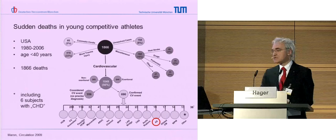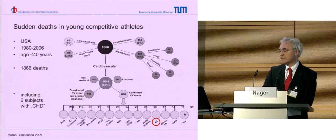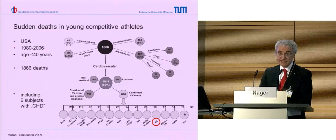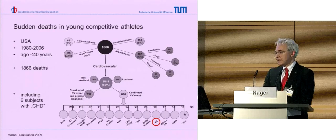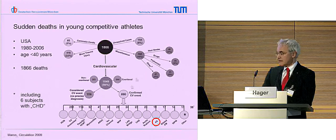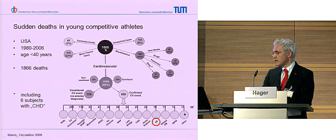Let's go into a registry of sudden deaths in young competitive athletes. That was a collection over 26 years - all deaths that happened in America in athletes below 40 years. They collected, unfortunately, 1,866 deaths. If you look at these deaths, about one third was of non-cardiac origin - for example, suicide, injury, or drugs.